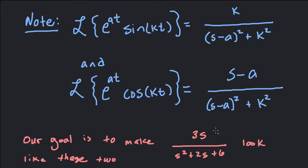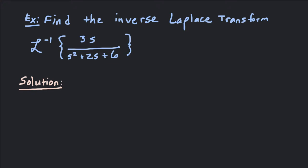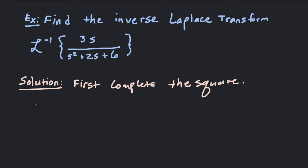So when we're completing the square, we're trying to make our function look something like one of these two. Our goal is to turn this function into a completed square in the denominator, and then if it's got an s in it, we want it to look like the cosine form. If it doesn't have an s in it, we want it to look like the sine form. So let's look at our example.